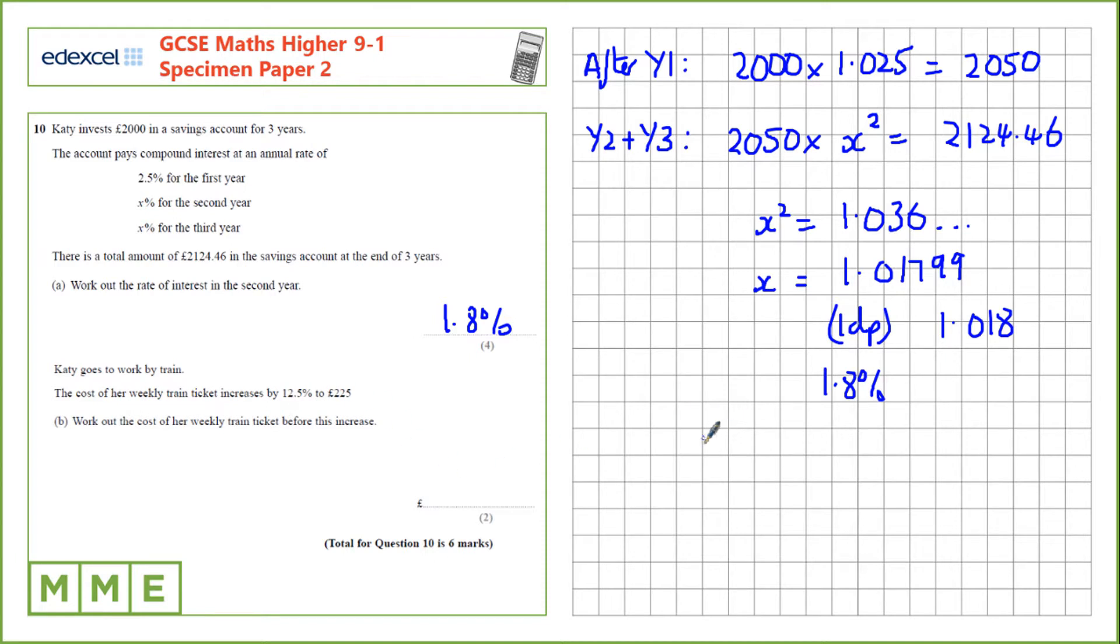If we increase by 12.5%, then her new price is 112.5% of the original total. If we want to find 100% from this, we can first find 1%, and we do that by dividing by 112.5%. We have to do the same on this side. And that gives us 2. We can then multiply by 100 to find 100%. And 2 times 100 is £200.